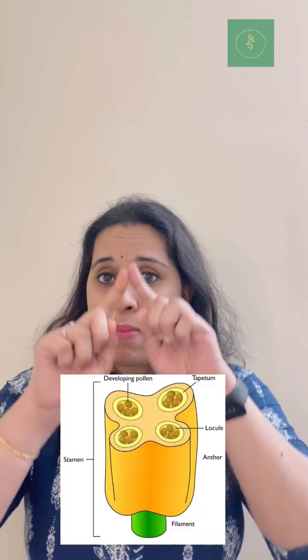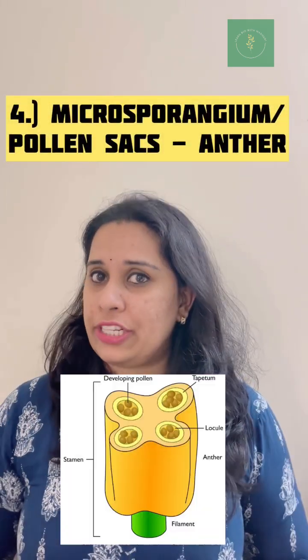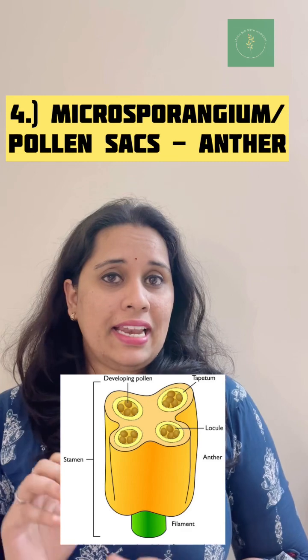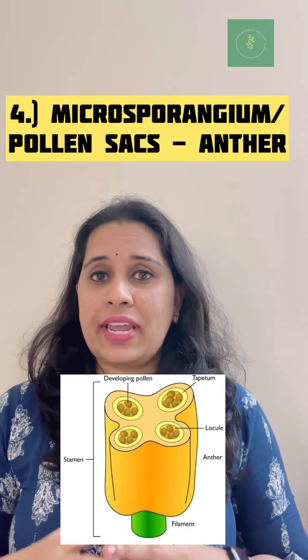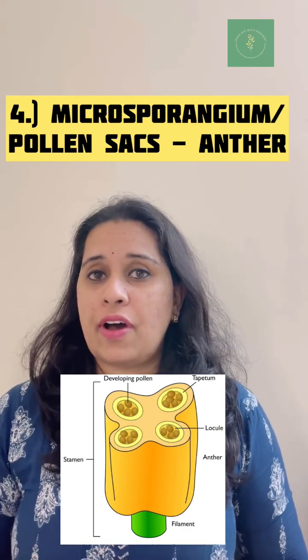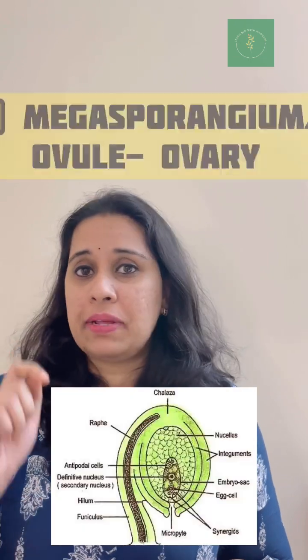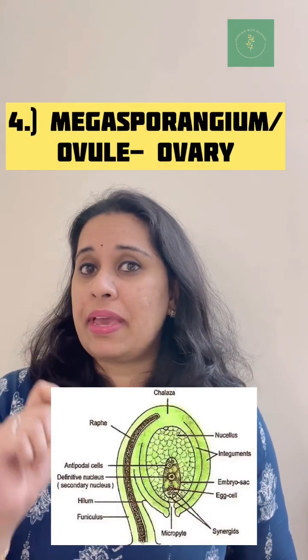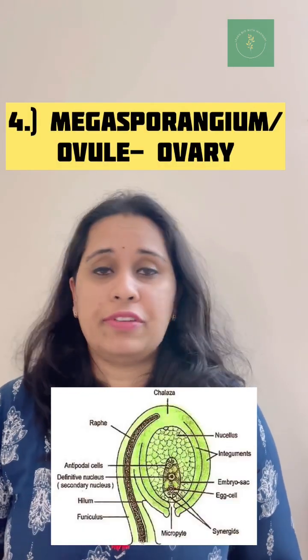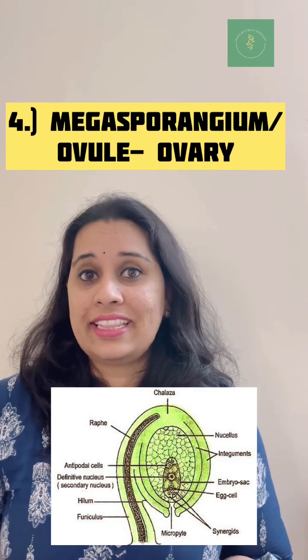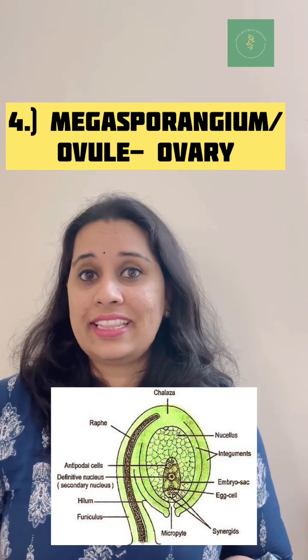Microsporogenesis occurs inside the microsporangium, mainly seen in the pollen sacs, which are found in the anther. Megasporogenesis takes place inside the megasporangium, which can also be called the ovule, found inside the ovary.